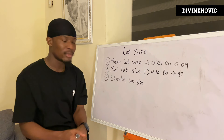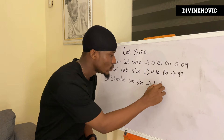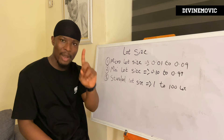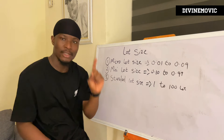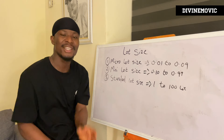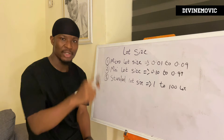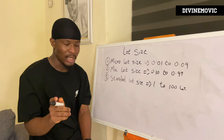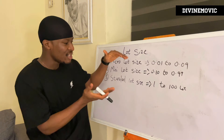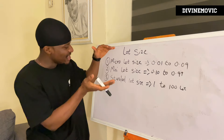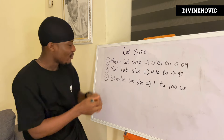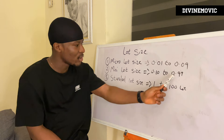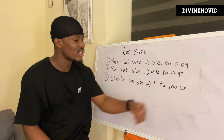We'll have the standard lot size, which ranges from 1.0 to 100 lot size. A 1.0 standard lot size is going to be worth $10.00 for every one pip movement made. That means if the price goes one pip in your favor, you're going to make $10.00, and if the price goes against you, you're going to lose $10.00. So anything from 1 to 100 falls under the standard lot size.